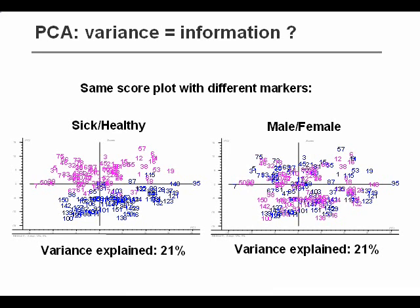In the plot shown here, the same score plot is shown in two different ways. In the left plot, the different samples are colored according to their status of being sick or healthy. We can see that there is a very nice separation between sick and healthy. So it seems that with these data, we can distinguish between sick and healthy persons, at least to some extent.